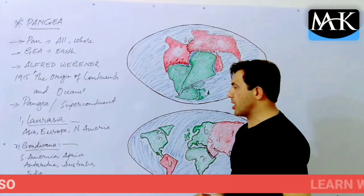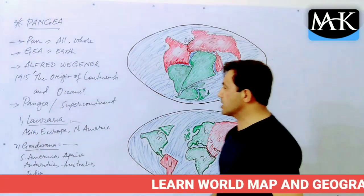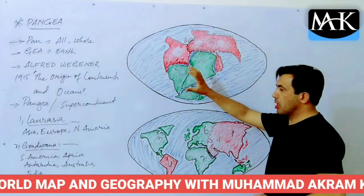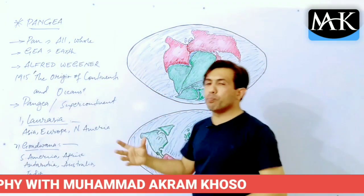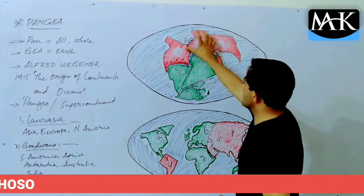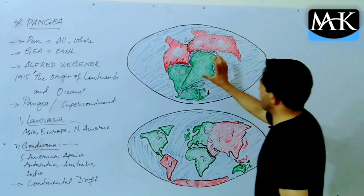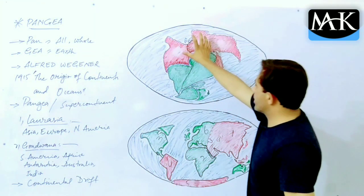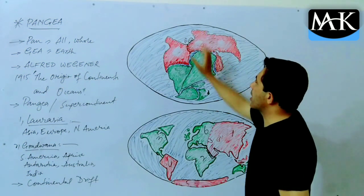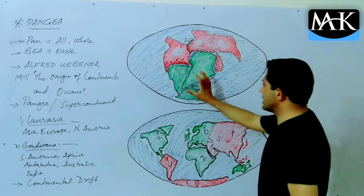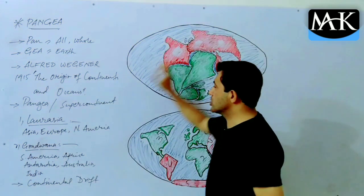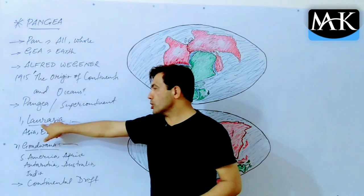Wegener went on to say that he divided Pangea into two parts. According to Wegener, there were two parts of Pangea: the northern part and the southern part. On our map, the red color indicates the northern part of Pangea, and the green color shows the southern part.